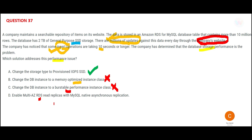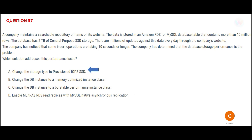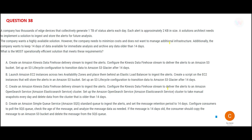Option D — enabling Multi-AZ RDS read replicas — is also wrong. Read replicas are a solution for reads, not writes. Here we are talking about update and insert operations, which are both write operations. So Provisioned IOPS is my final answer.